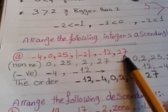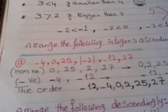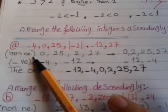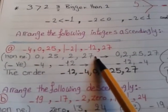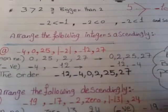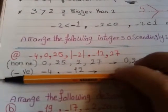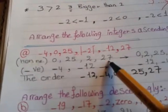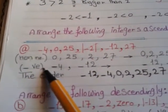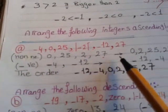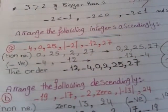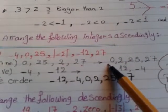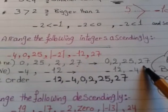First, separate the numbers into two groups: non-negative and negative. This is the best method for solving this type of problem. The non-negative group is: 0, 2 (from |−2|), 25, and 27. The negative group is: negative 4 and negative 12. Now arrange the non-negative group in ascending order: 0, 2, 25, 27.